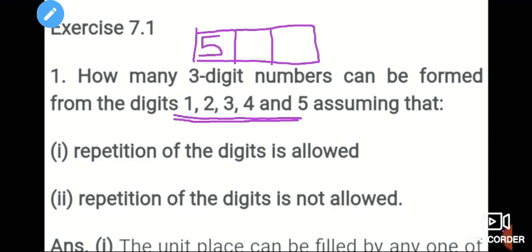In 5 ways, you can fill the first box — meaning 1, 2, 3, 4, or 5, any number you can write. If you write 1 the first time, repetition is allowed, so you can write it again. In the second block we have 5 ways to fill, and in the third block we also have 5 ways to fill.